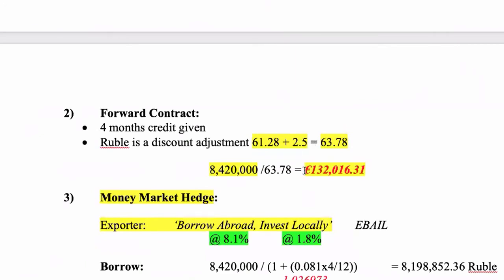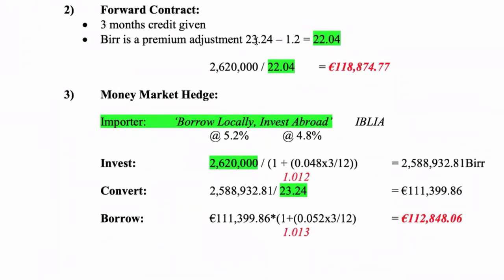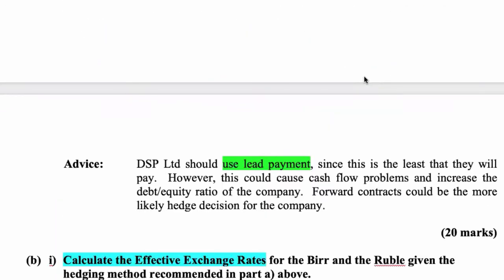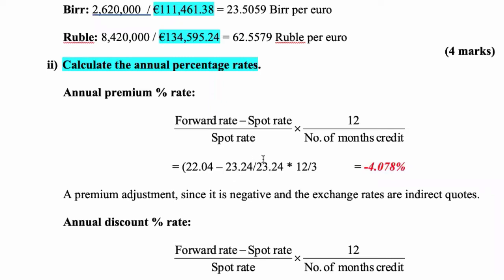You did it already — and regarding your forward contract, there it is: 23.24 minus 1.2 equals 22.04. I might have to make that change. Forward: 22.04, because we did make that error and I adjusted for it. Spot divided by 23.24 — making those changes. So the forward minus the spot divided by the spot, multiplied by 12, and the terms of credit given was 3.